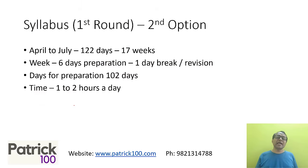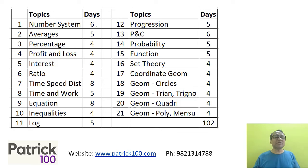In the second option, you have April to July, which is 122 days. Assuming you can give 6 days of preparation per week and 1 to 2 hours a day, you can complete the syllabus in 4 months. In these 102 days allocated to topics, you'll spend slightly more days per topic, but the idea is the same.